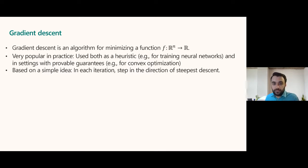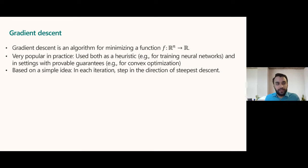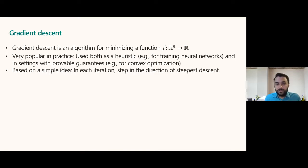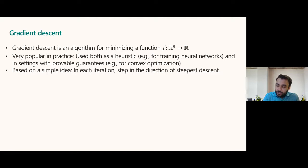Gradient descent is used in practice a lot — both as a heuristic and in settings with provable guarantees. A heuristic algorithm is one where you don't necessarily have a mathematical proof that it'll find the correct answer. One very common application of gradient descent is for training neural networks, where it's used as a heuristic. We don't really understand whether gradient descent actually finds the minimum, but it seems to work really well in practice.